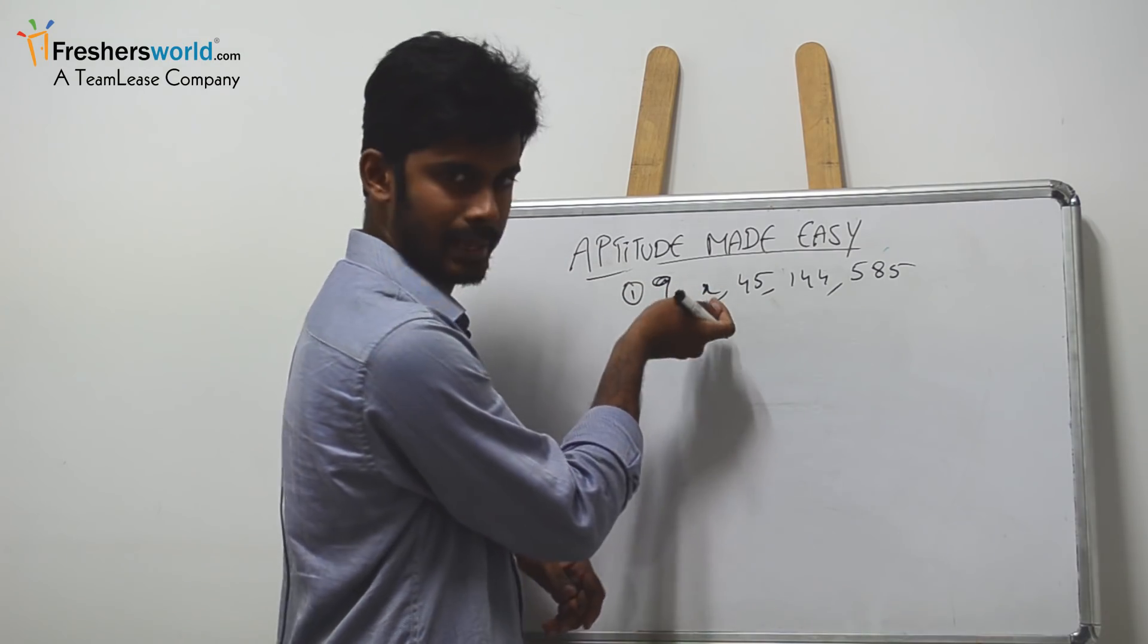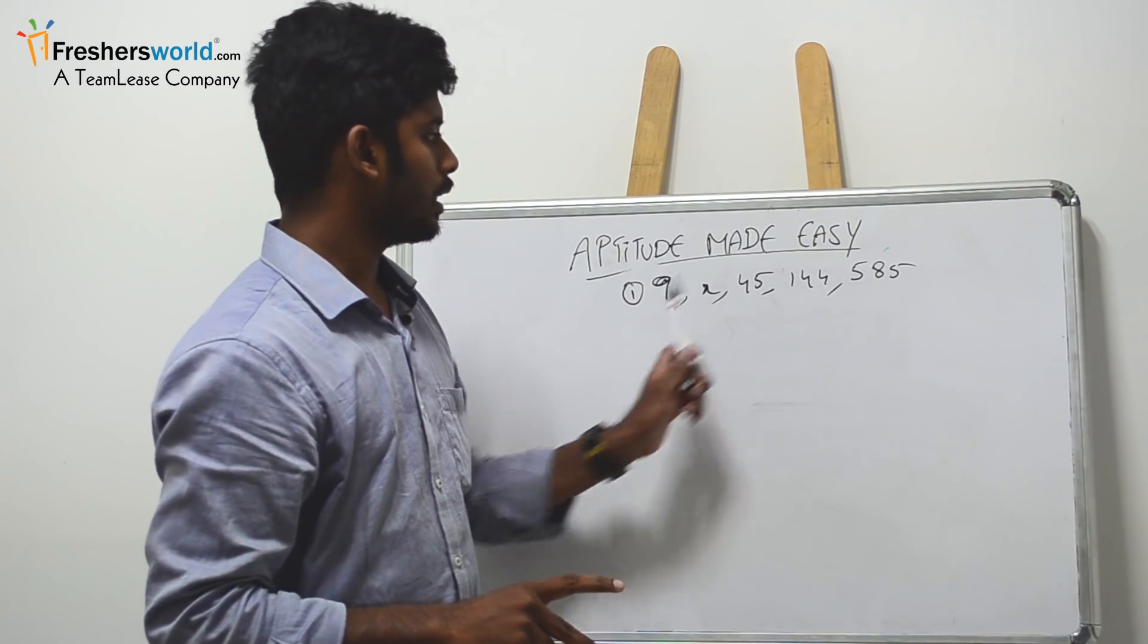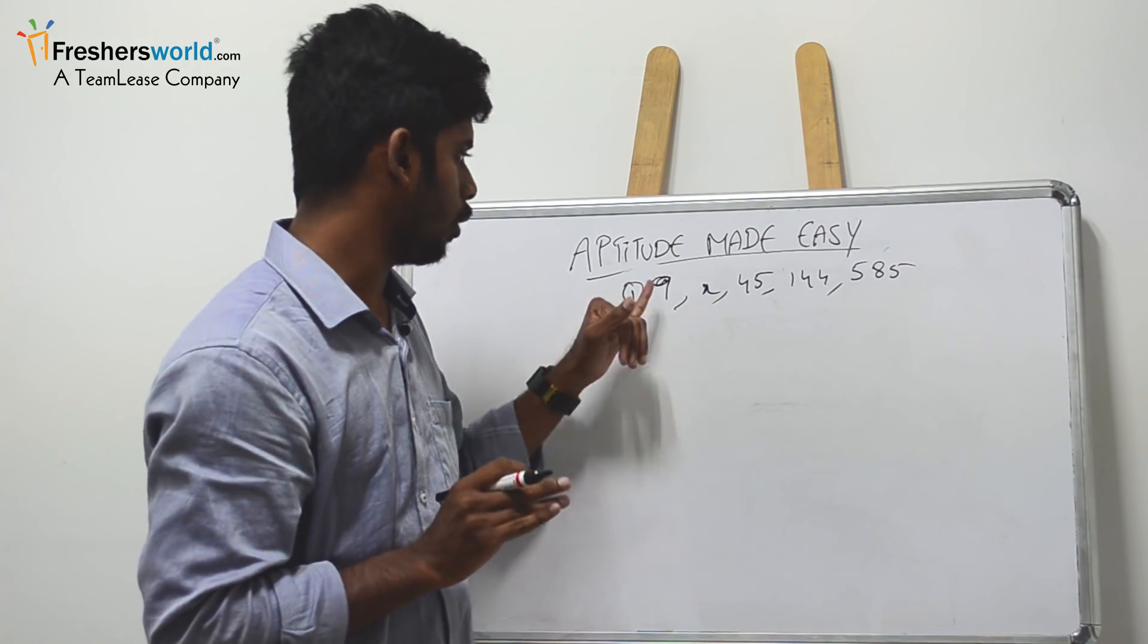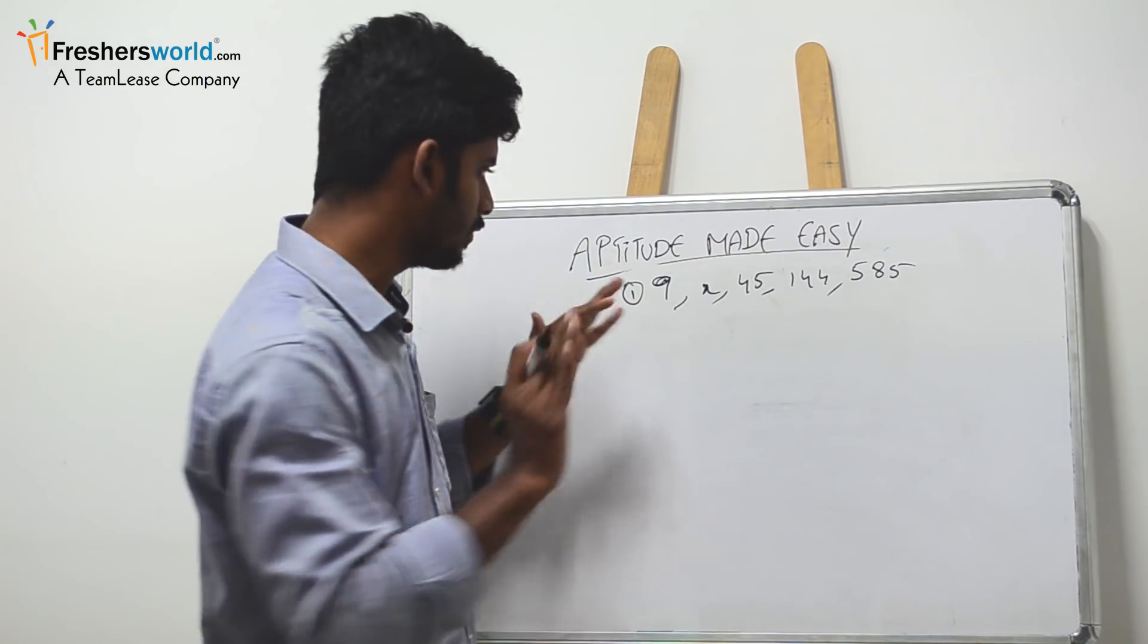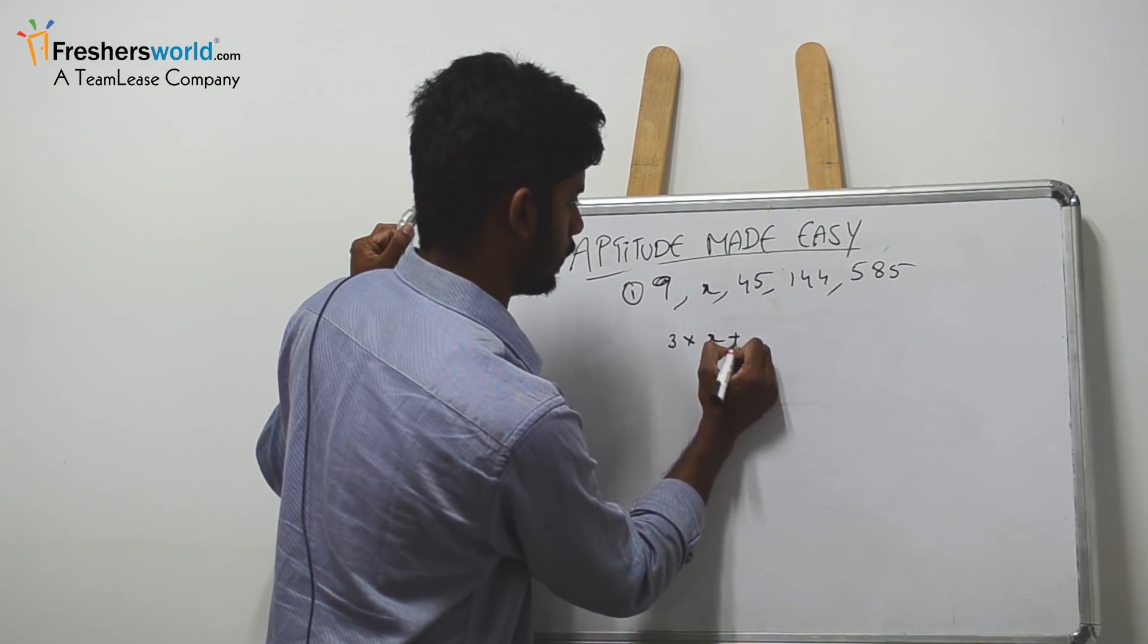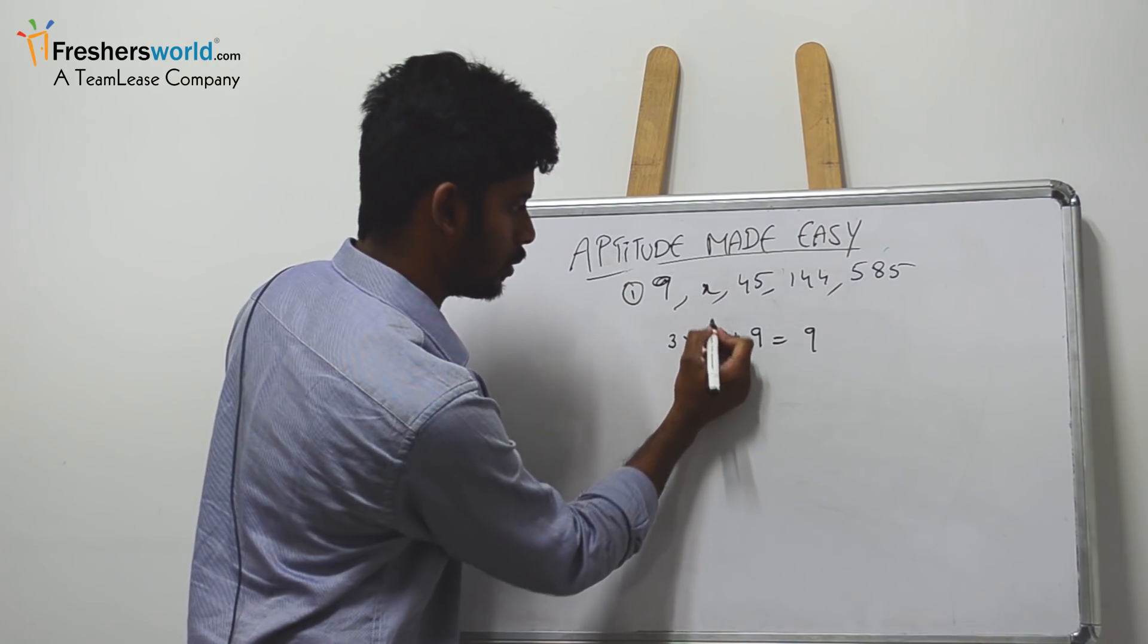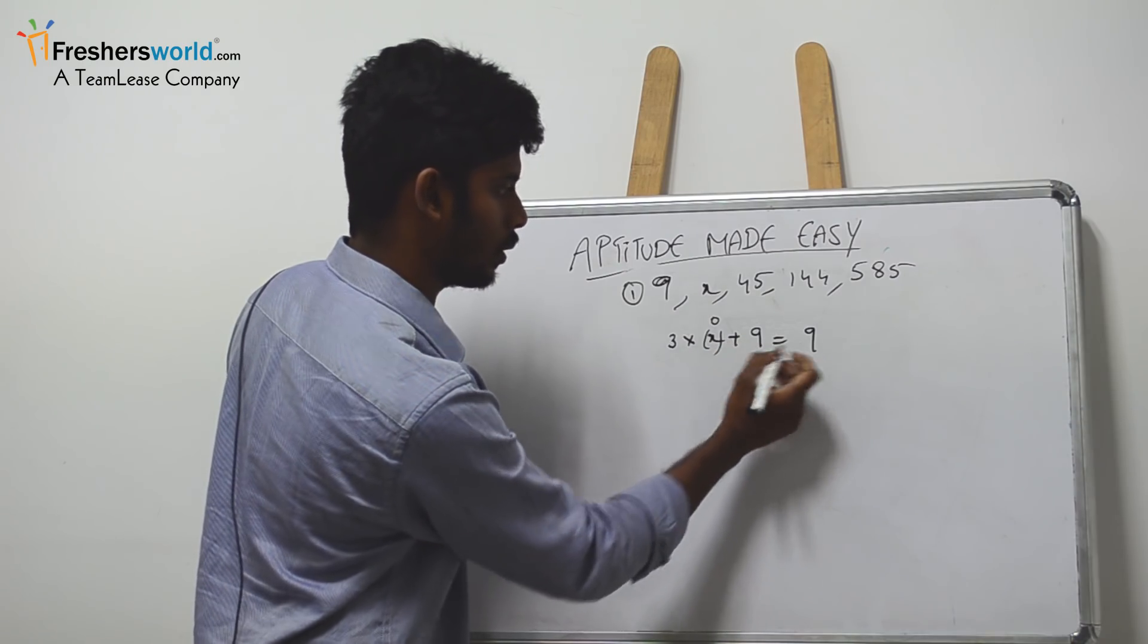Here you can see a multiple of 3 or it could be a multiple of 9. Try to crack how this 9 came. You can clearly observe it's a multiple of 3 or 9. See if it could be 3 into some number plus 9. Try to make this number zero. So 3 into 0 is 0, and plus 9 equals 9.